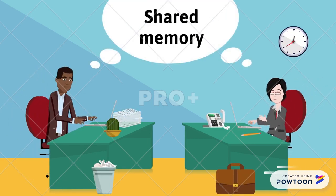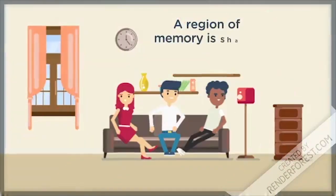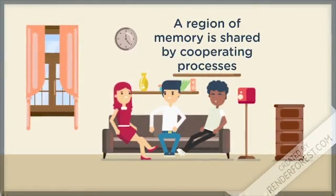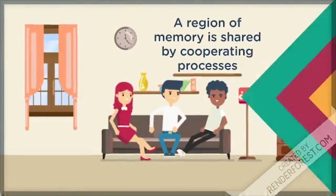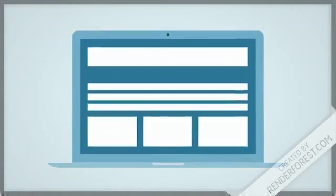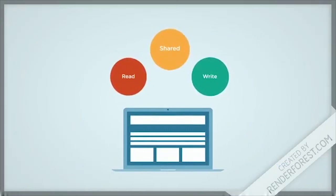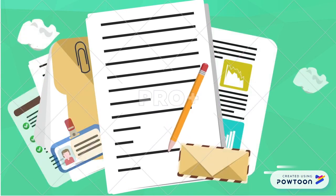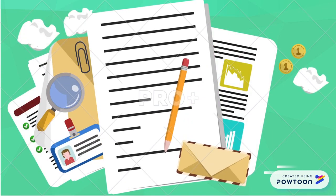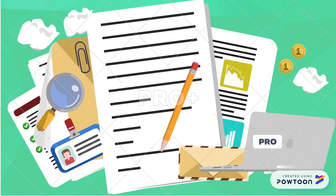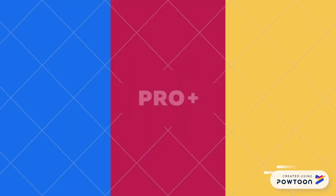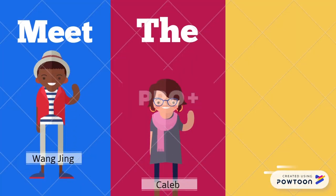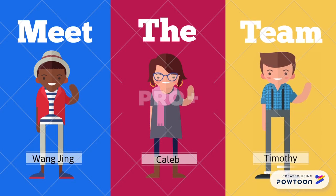One of the communication methods is through shared memory. A region of memory is shared by cooperating processes. Processes can then exchange information by reading and writing data to the shared region. Think of it like a Google Doc. To do a project, group members need to work on the same document. So, the group creates a Google document, and group members can add and delete the contents of the document.